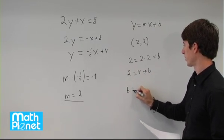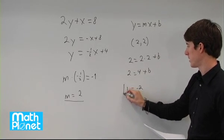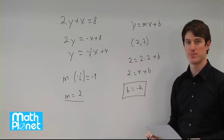Therefore, b is equal to, if we have 2 minus 4, negative 2. So the y-intercept, b is equal to negative 2.